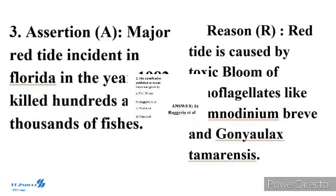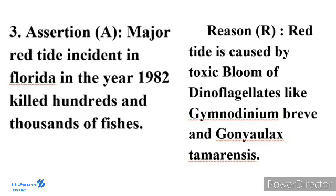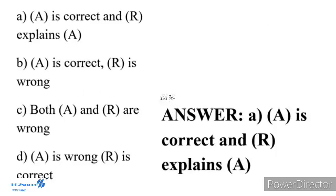Question 3: Assertion — A major red tide incident in Florida in the year 1982 killed hundreds of thousands of fishes. Reason — Red tide is caused by toxic blooms of dinoflagellates like Gymnodinium breve and Karenia brevis. Option A: A is correct and R explains A. Option B: A is correct, R is wrong. Option C: Both A and R are wrong. Option D: A is wrong, R is correct. The correct answer is Option A: the assertion is correct and the reason explains the assertion.